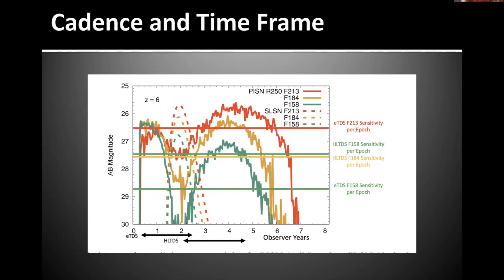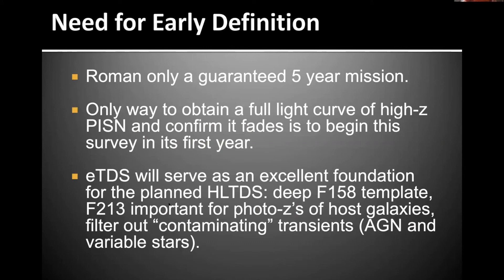But second of all, you have to start early, and that's really one of the primary drivers for this early definition survey. If you have only a guaranteed lifetime for Roman of five years, and high latitude starts at just over two years, you really need to start this early on at about zero years. There are other advantages to starting such a survey early. You provide this deep 158 template for the high latitude time domain survey. F213 buys you some photosies of host galaxies, and also you're able to filter out these contaminating transients such as AGN and variable stars.